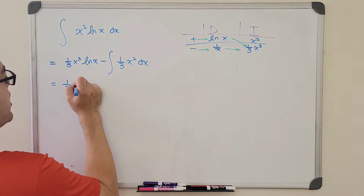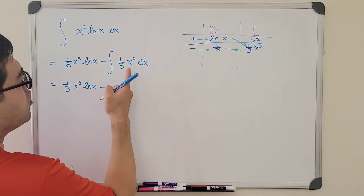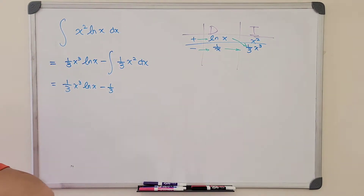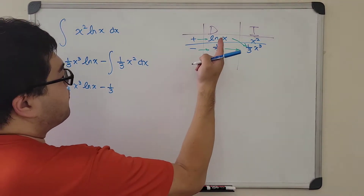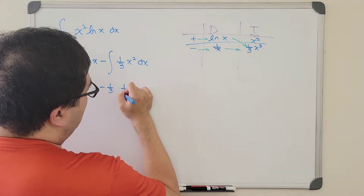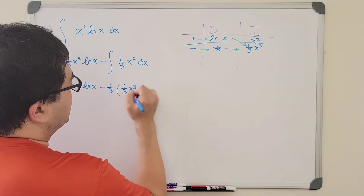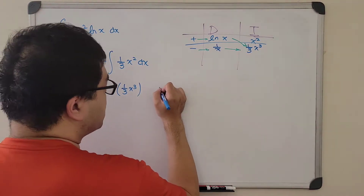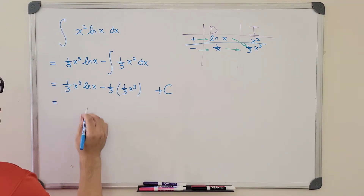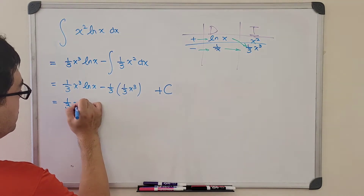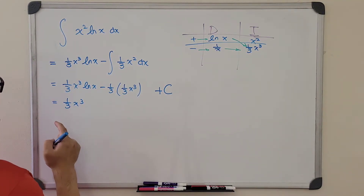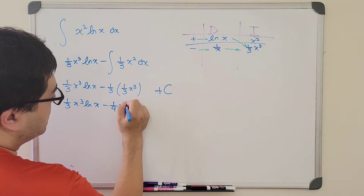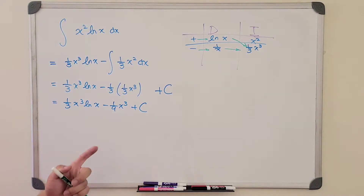Now we finally have a form we know how to integrate. Since 1 third is a constant, we can pull it out. The integral of x squared is another copy of 1 third times x to the third power. We're finally done with all the integration — don't forget, we still need to put plus C at the end. Simplified, we get 1 over 3 times x cubed times ln of x minus 1 over 9 x cubed plus C.